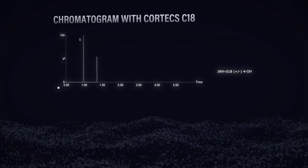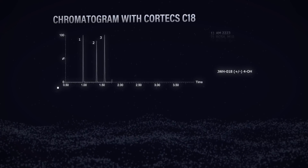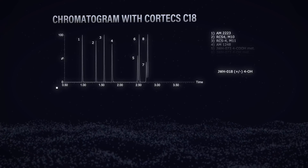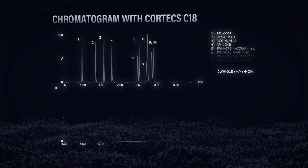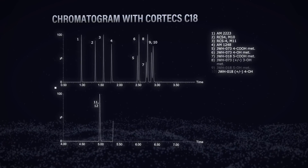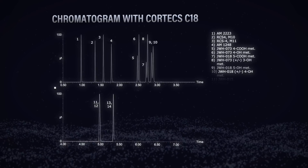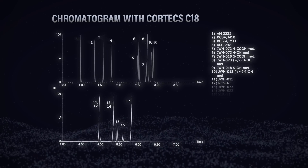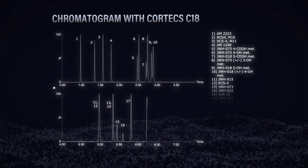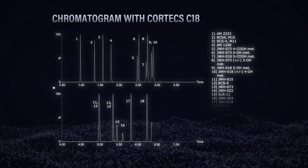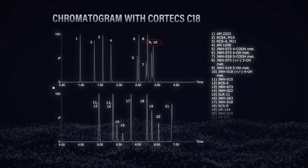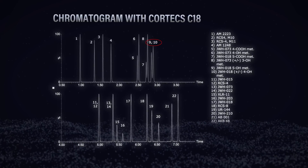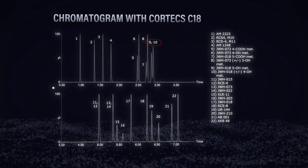Here's the chromatogram from those 22 synthetic cannabinoids. The method is really complex and we don't want to be tinkering around with it too much. We've got everything mostly separated — those two isobaric compounds, peaks 9 and 10, we're able to resolve chromatographically, so we don't want to mess with that at all.